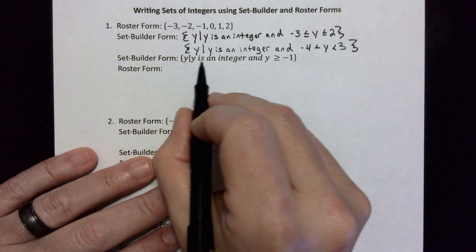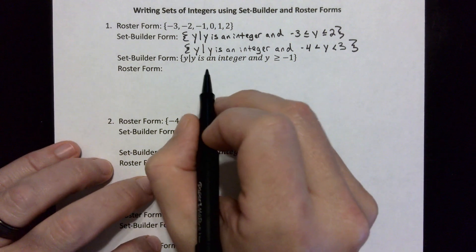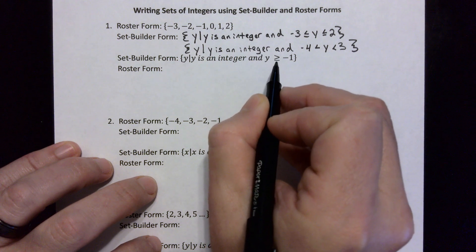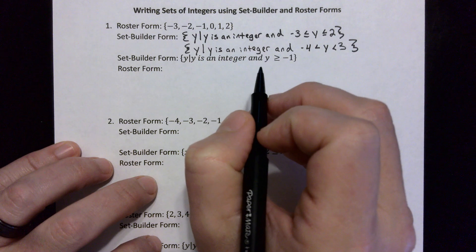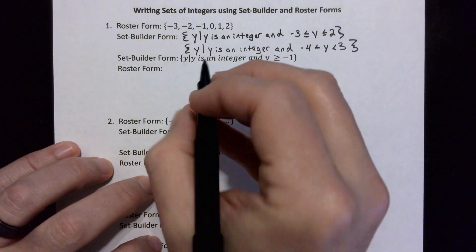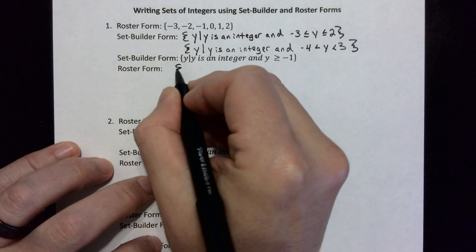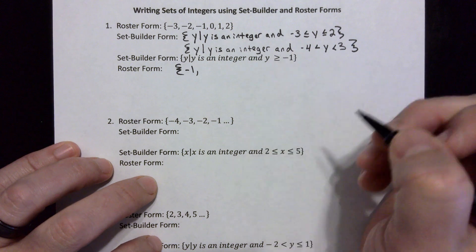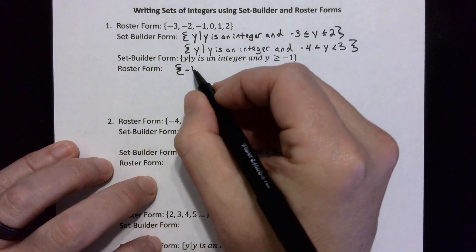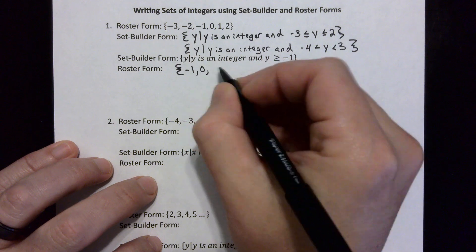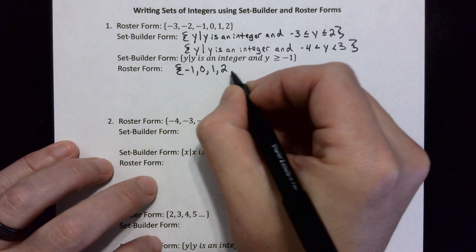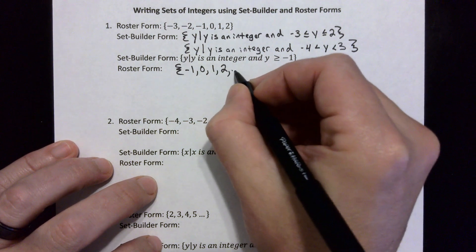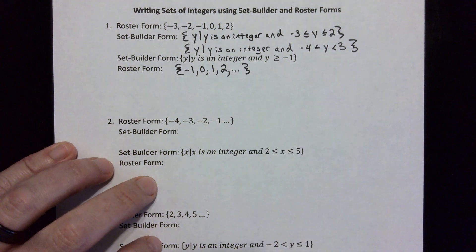Now for the other direction: we're given set builder form and asked to convert to roster form. We have y such that y is an integer and y is greater than or equal to negative one. Since y is greater than or equal to negative one, the smallest number on the roster is negative one — included because of the equal-to sign — then zero, one, two, and we write dot dot dot to show the pattern continues forever.